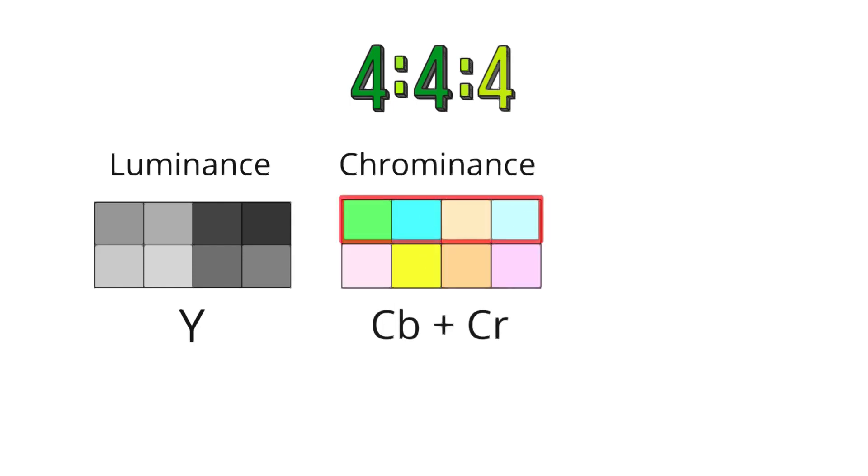The second 4 in the 444 sequence relates to the chrominance sampling for the first color channel. In this format, the 4 indicates that the chrominance for the first color channel is sampled at the same rate as luminance, meaning that for every 4 pixels of luminance, there are also 4 pixels of chrominance information for this color channel.